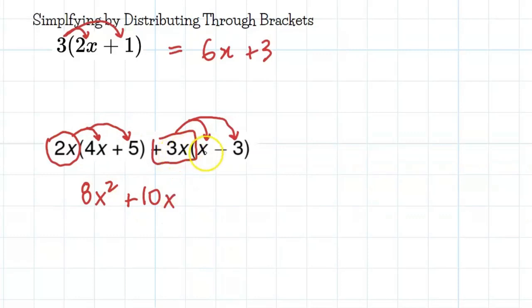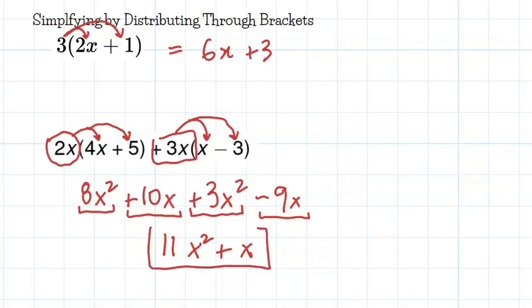And I'm moving on to here. 3x times x is 3, and then x times x is x squared. And 3x minus 3 is negative 9x. And now at this point, I can simplify. I have like terms. I'm 8x squareds and positive 3x squareds, so I have 11x squareds. And here I have 10x's and negative 9x's, so I have plus 1x. Plus 1x, or I can just write it as plus x. And there is my answer.